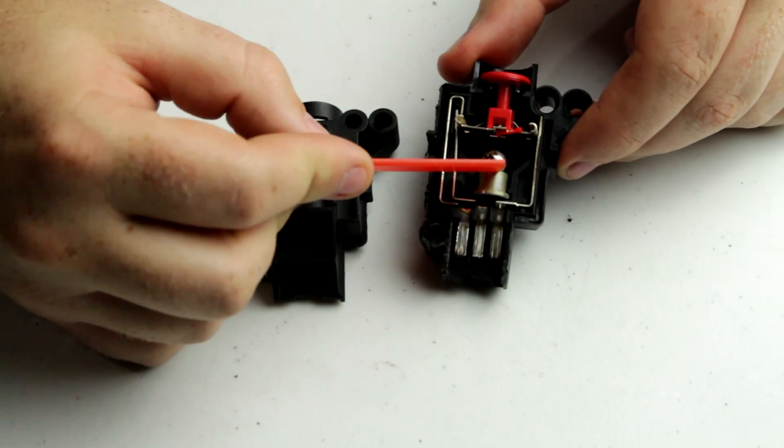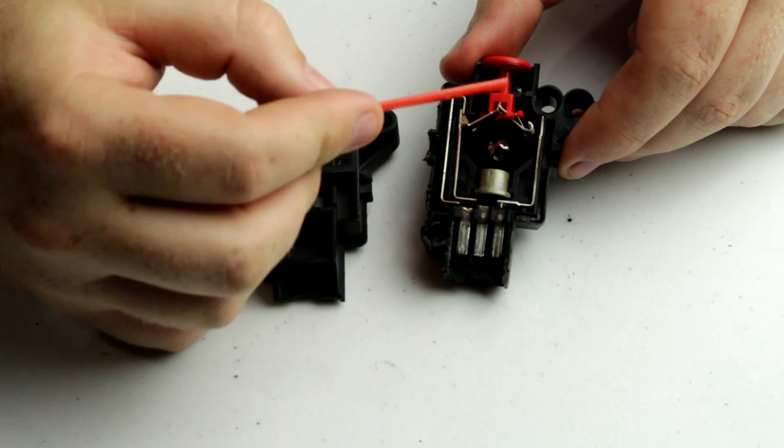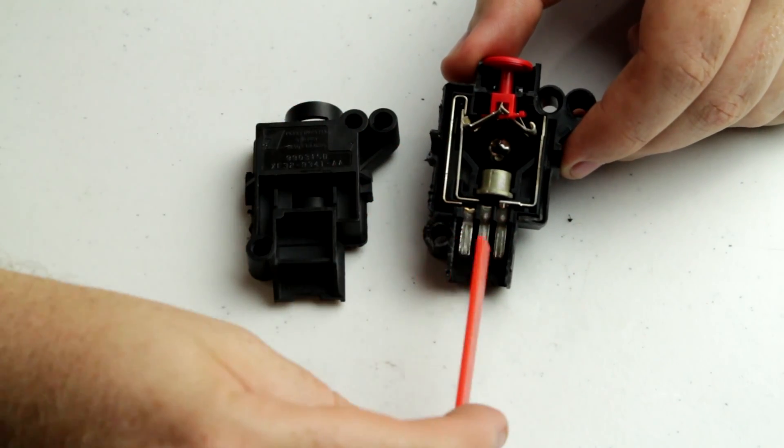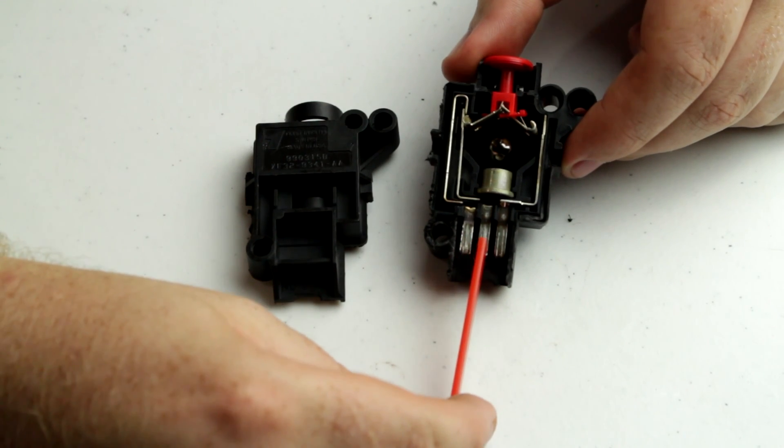Alright let's dislodge this ball. Alright you see the ball flung up, hit this, knocked it out of place and changed the circuit from this contact to this contact. This one remains the same.